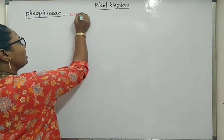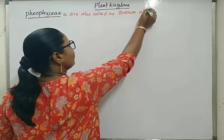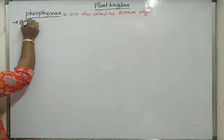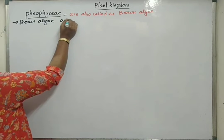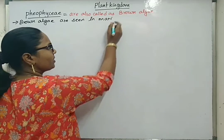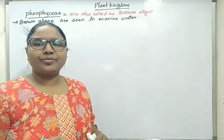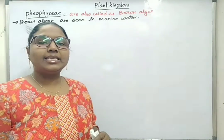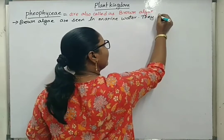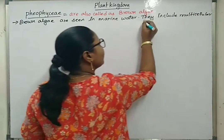Phaeophyceae members are also called as brown algae. Brown algae are seen in marine water only — there are no freshwater forms. In Chlorophyceae members, we have seen there are unicellular forms, but in case of Phaeophyceae, we see only multicellular filamentous forms.